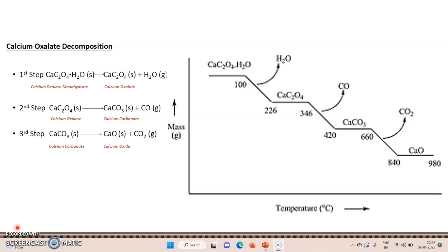In thermogravimetric analysis, we are heating the sample and continuously measuring the weight of the sample. From the thermogram obtained, we can have information regarding the thermal stability of a material. There are many applications of thermogravimetric analysis, and one specific application mentioned in the syllabus is to study the decomposition of calcium oxalate monohydrate.